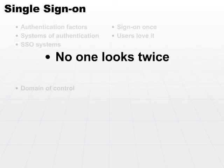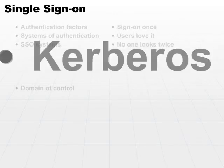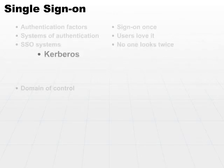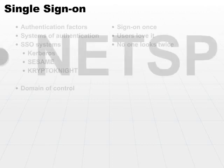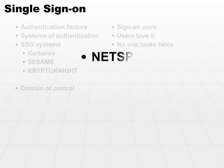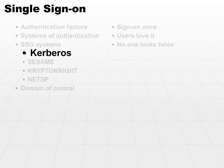Examples of single sign-on systems include Kerberos, Sesame, Kryptonite, and NetSP — four different products available in the market. The most popular of all four is probably Kerberos. In fact, it's been integrated into newer Microsoft products, and you'll see it being used more and more as a central authentication mechanism.